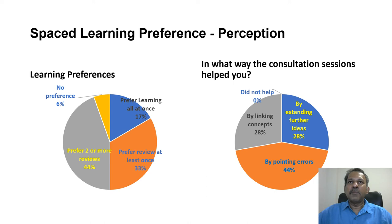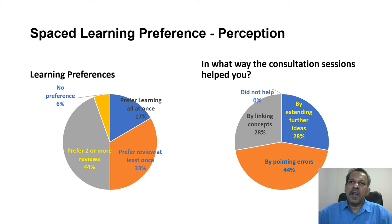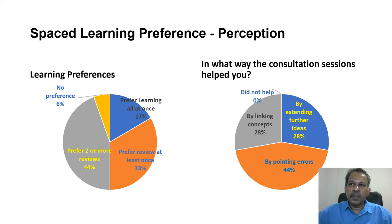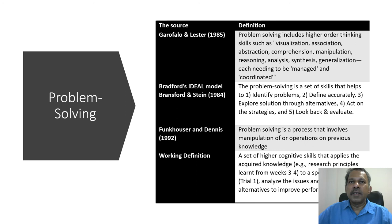Looking at what aspect of the consultation session was most helpful, one important outcome I did not expect was identifying errors. The majority of students valued this, because during consultation I could easily identify errors in their concepts and way of thinking and put them on the right track — something I had not considered, but the student survey made evident. 28% preferred linking the basic concepts discussed in the first three weeks, and another 28% preferred the consultation as an opportunity to extend ideas a little beyond the concept. Overall, this survey provided valuable in-depth information.